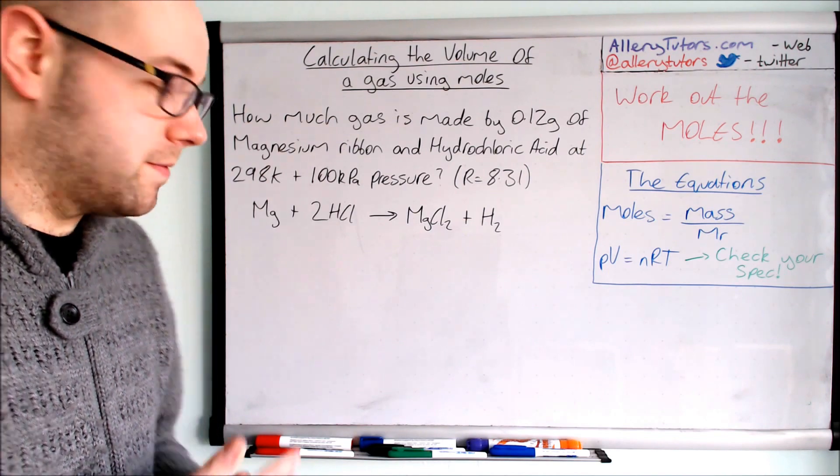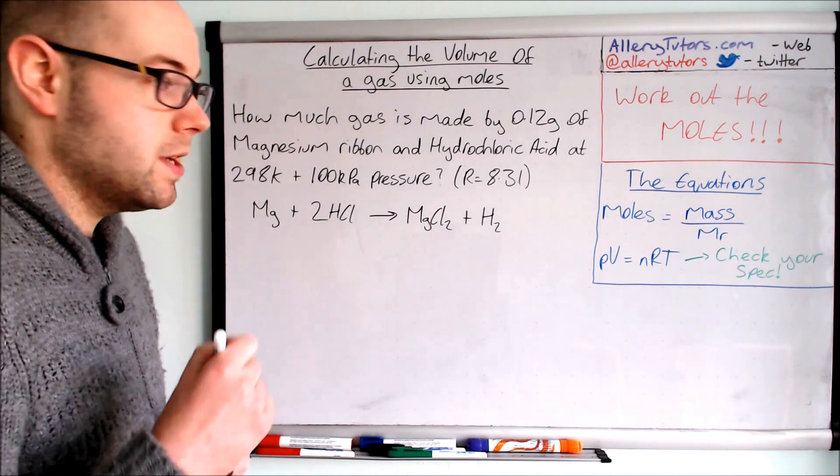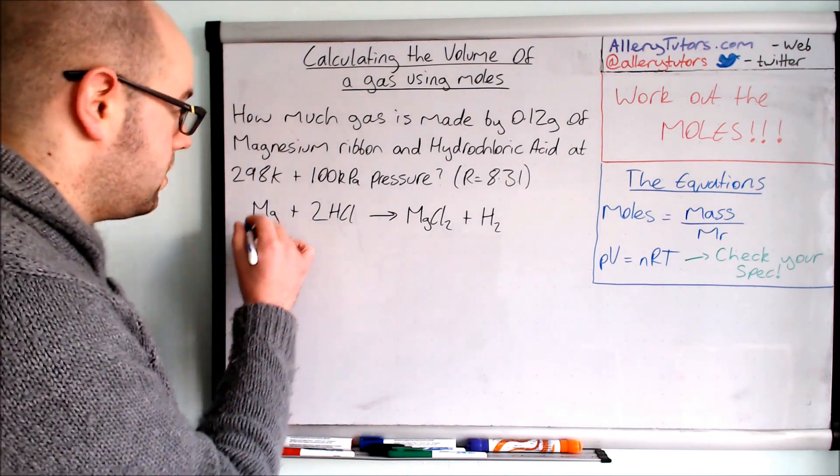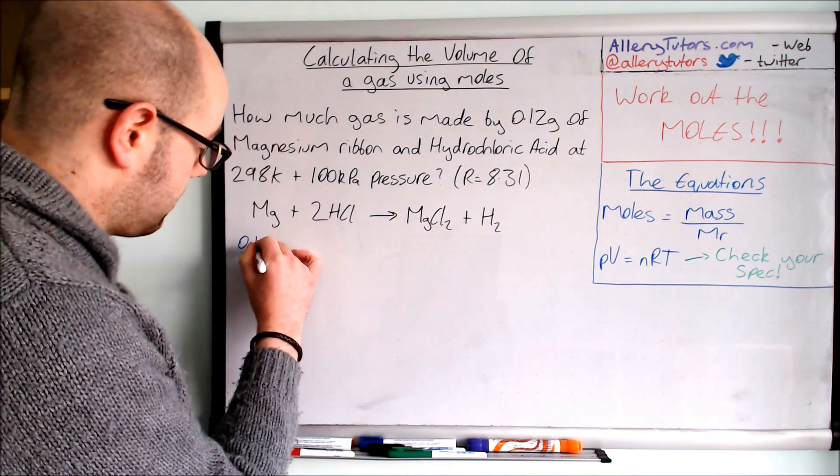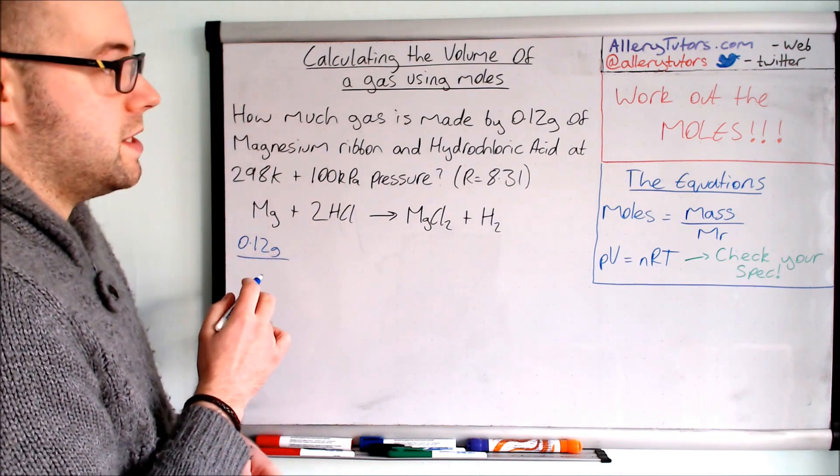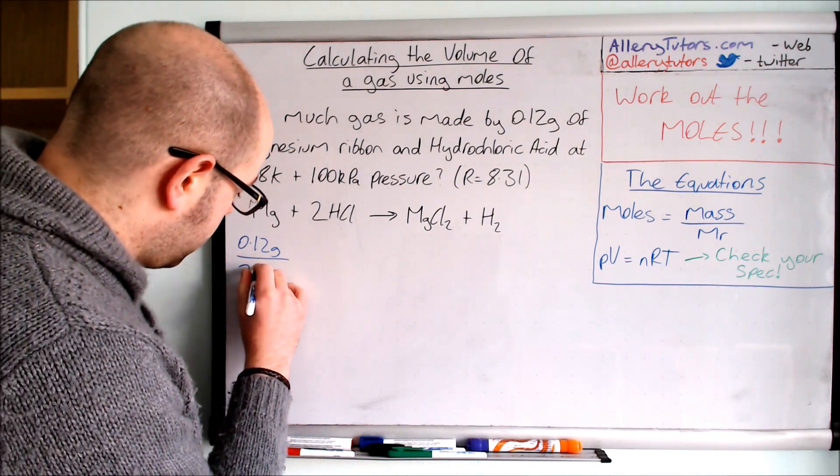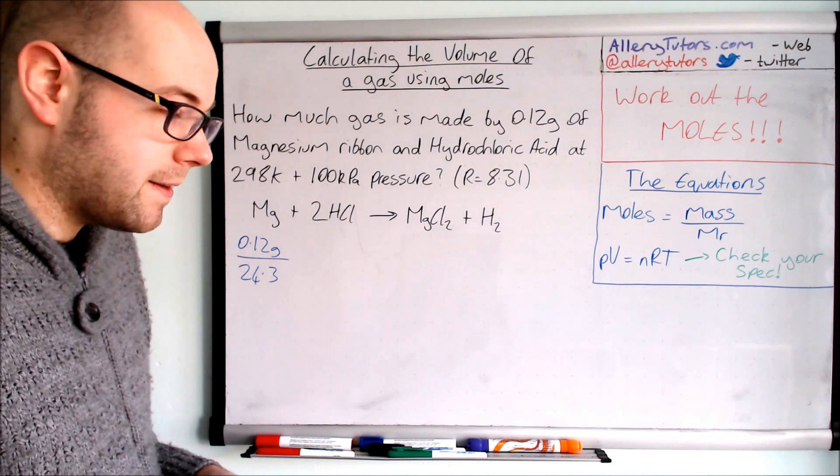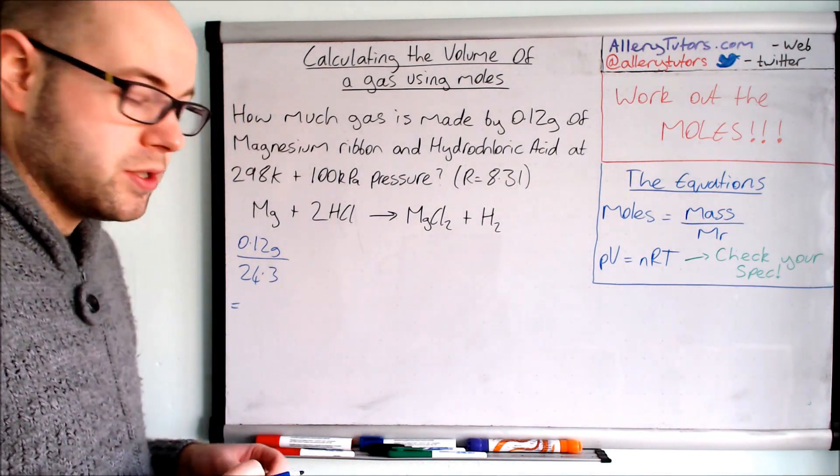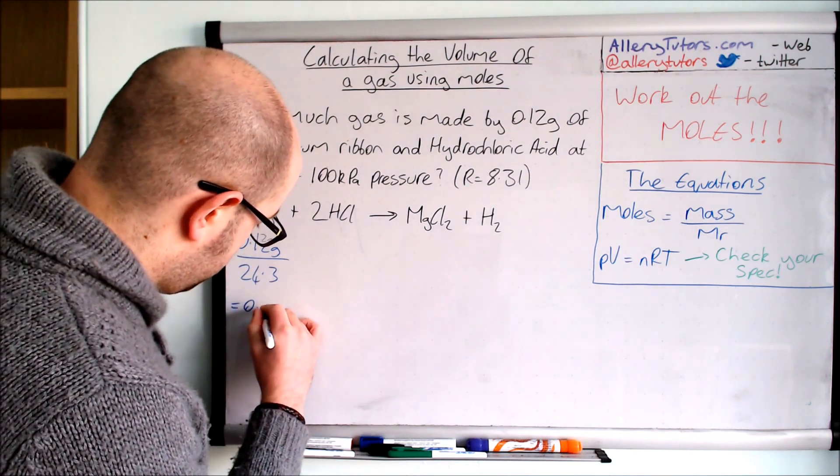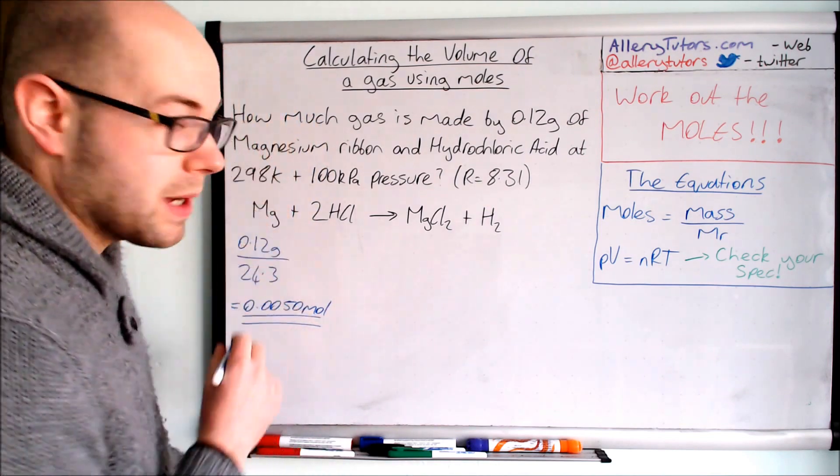So let's make a start. Let's write this in, let's do it in blue. Okay so we're going to work out the number of moles of magnesium. So because it's a solid, this is magnesium solid, we're going to use the mass over MR equation which is 0.12 grams and we're going to divide that by the molecular or the atomic mass of magnesium and the atomic mass is 24.3. So if you look in your periodic table you'll find it there. And if we put that into our calculator we should come out with a value of 0.0050 moles.